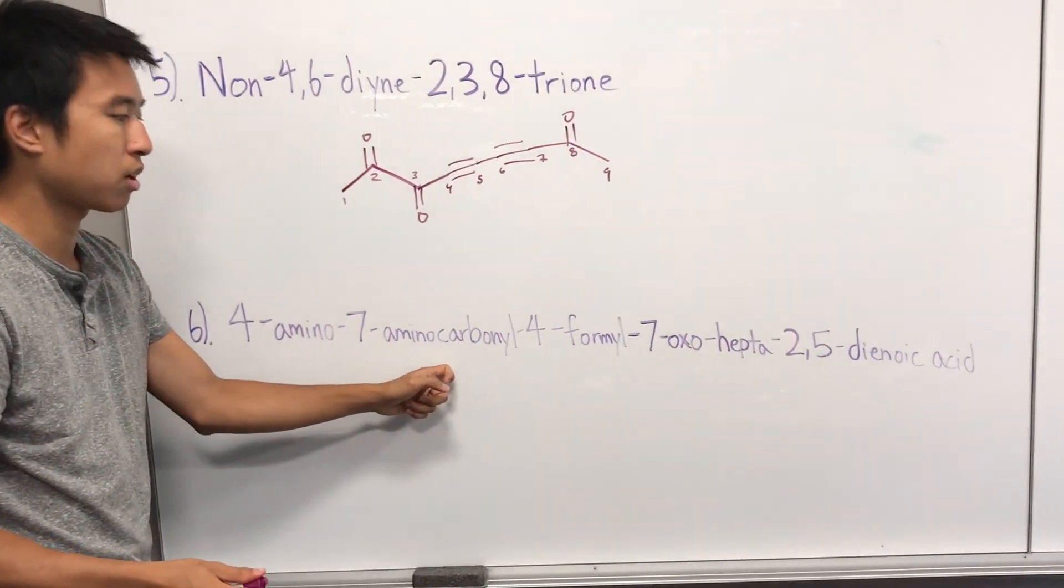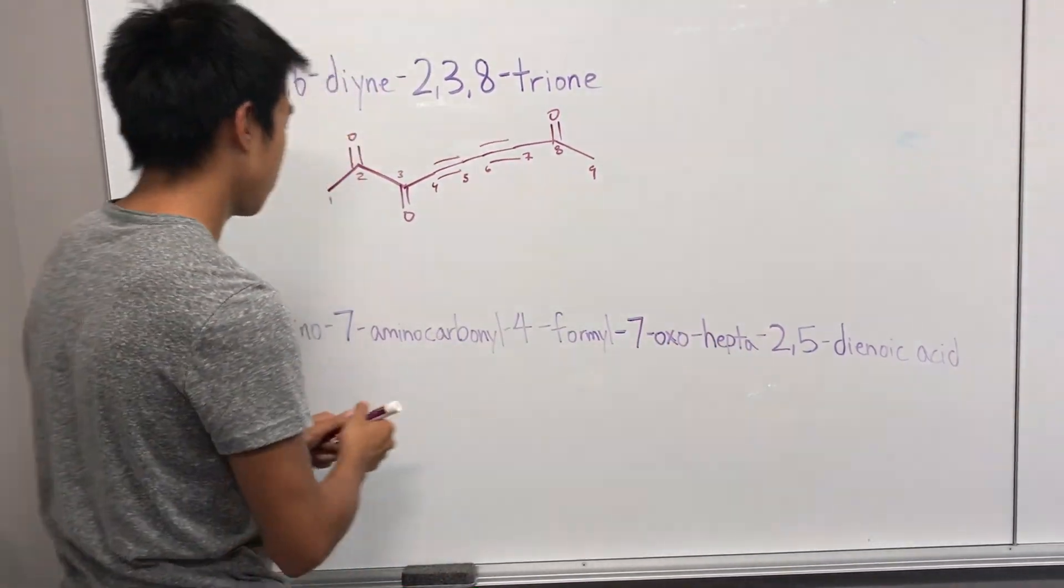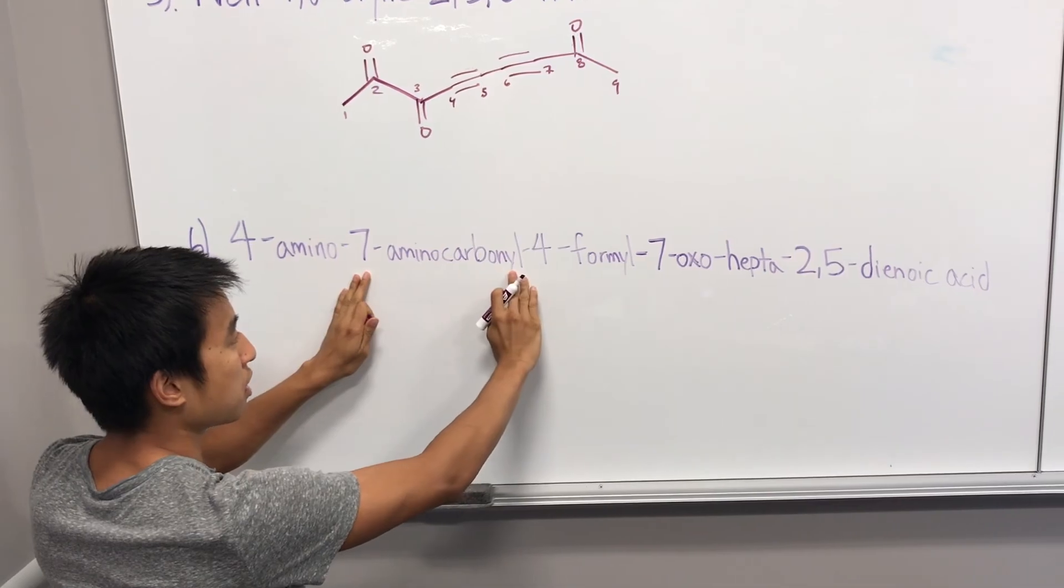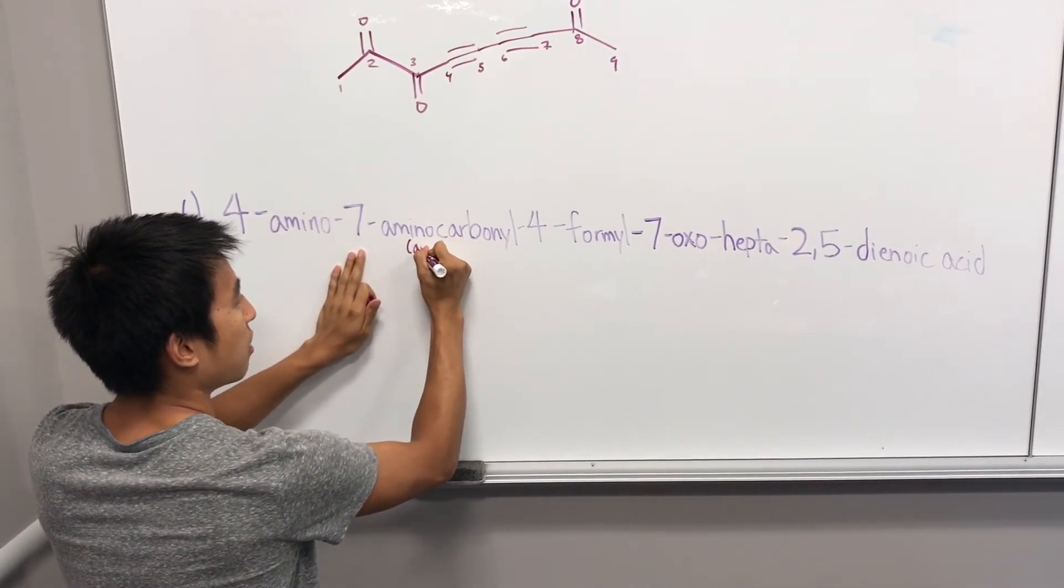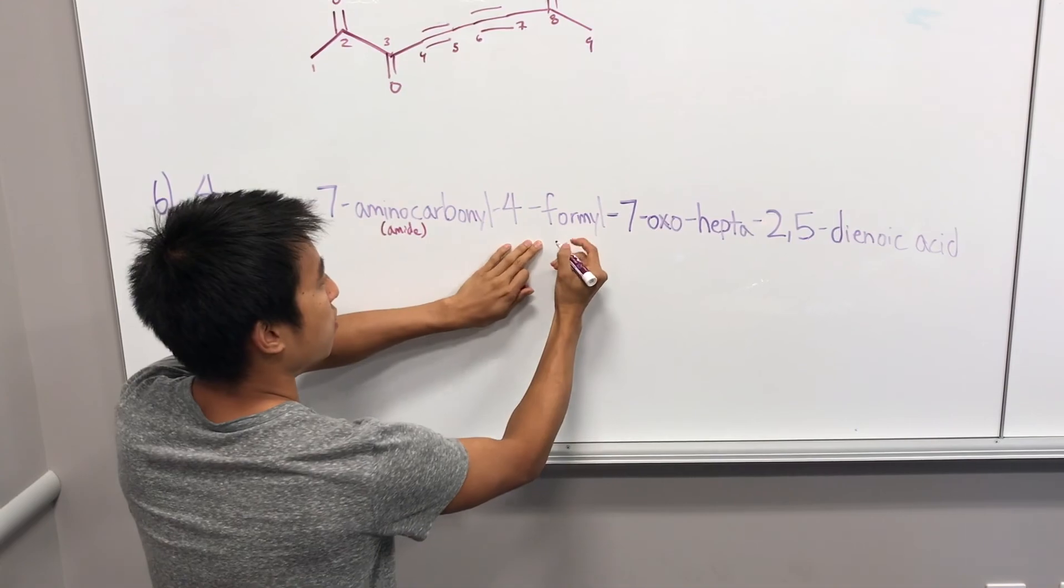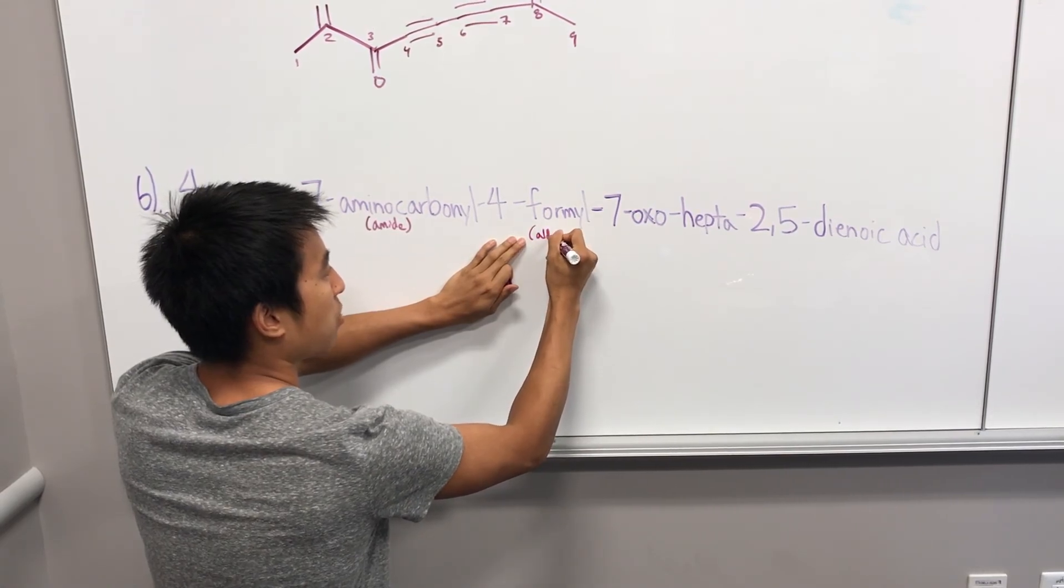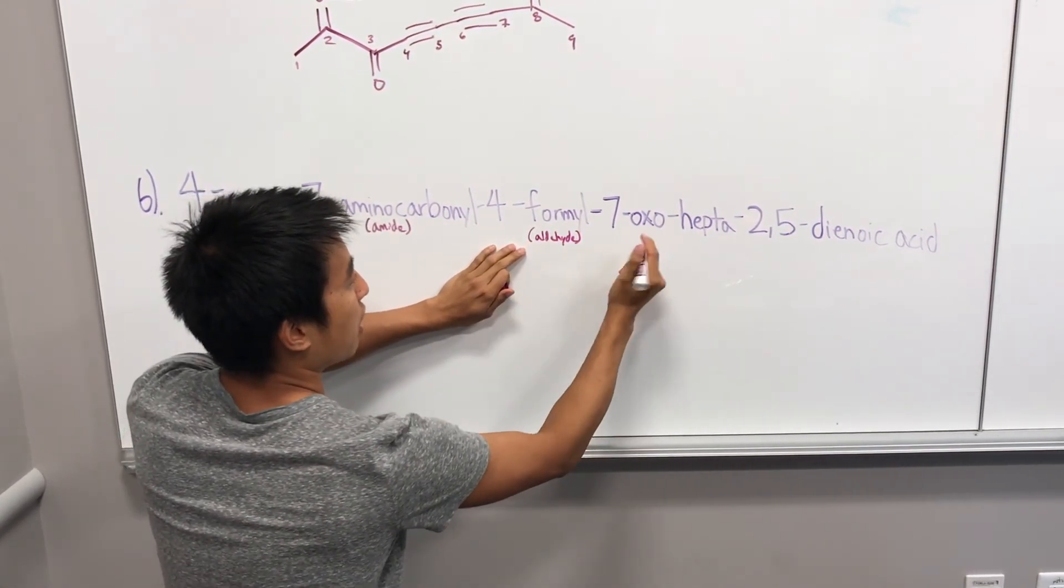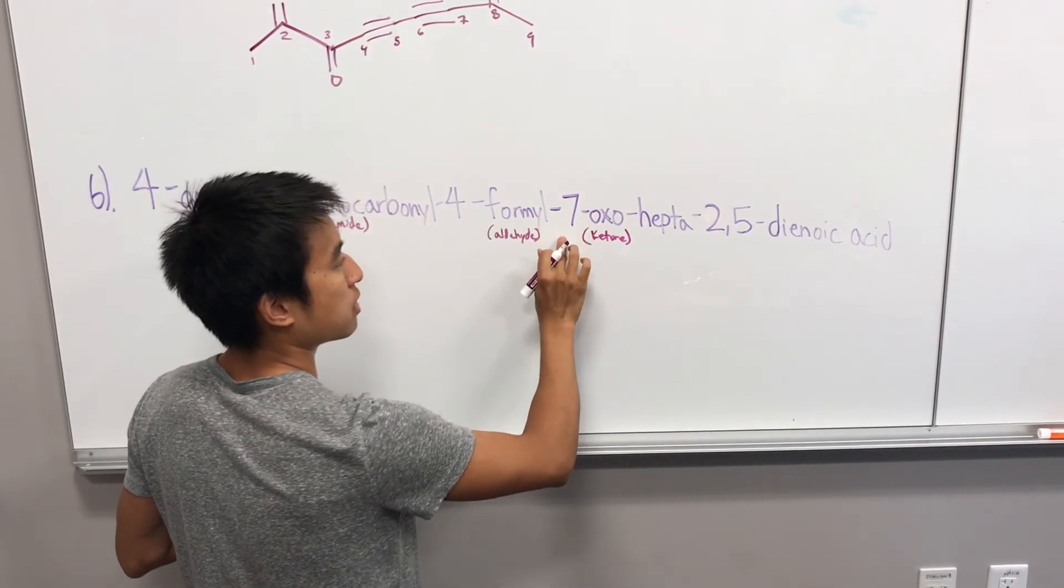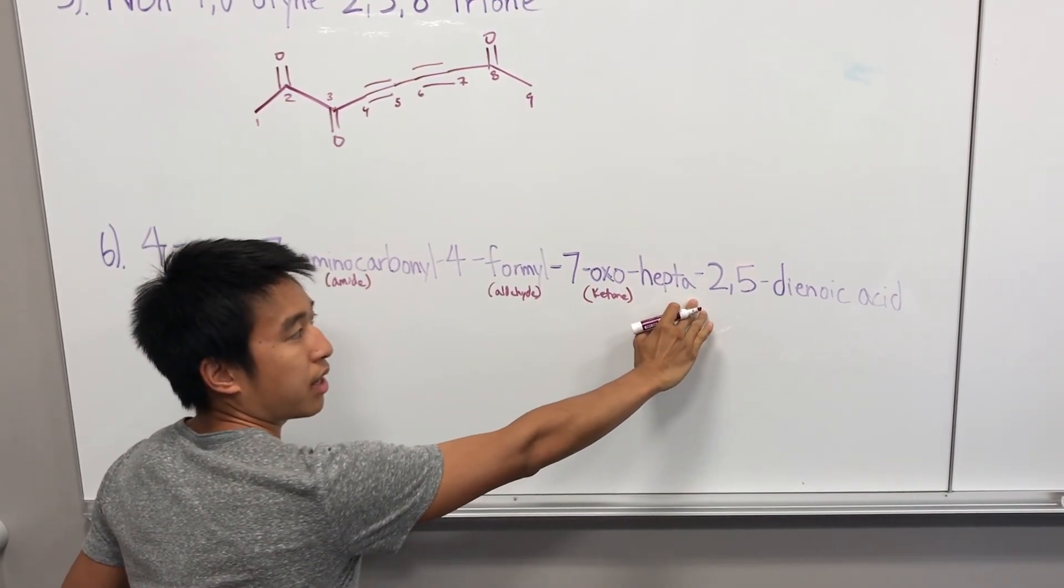So this one: 4-amino, 7-aminocarbonyl, 4-formyl, 7-oxo, hepta-2,5-dienoic acid. Carbon four special, it has an amino group. Carbon seven special, it has an aminocarbonyl group, which is kind of weird, but this is an amide branch. And 4-formyl. Formyl, kind of like formaldehyde, is what we use to say we have an aldehyde branch coming off. Then 7-oxo, but oxo is for ketone. So our parent chain is hepta, and hepta is seven. So we are going to have a seven-member chain.